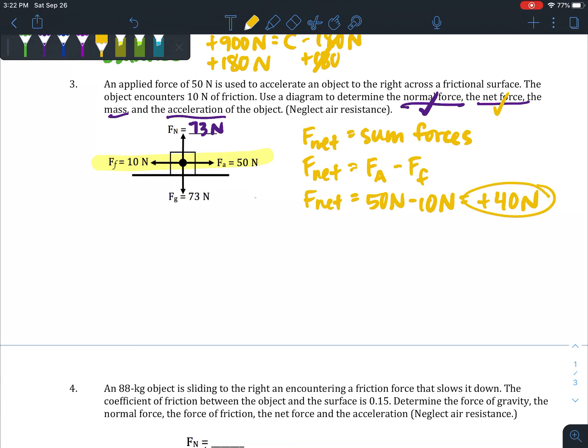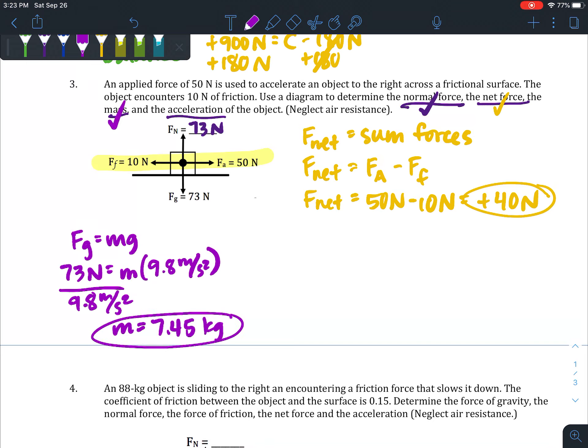Third question asks for the mass, so we're going to use the gravity formula for that. They told us F_g was equal to 73 newtons. This box is on Earth, so 9.8 will go in for g. I'm just going to divide by 9.8 so I can get m by itself, and I get a mass equal to 7.45 kilograms—I am rounding that a bit.